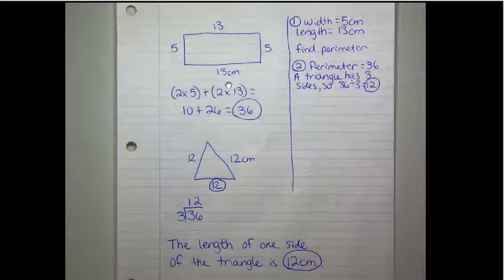We need to find the perimeter of the rectangle. 2 times 5 is 10, and 2 times 13 is 26. 10 plus 26 is 36. So the perimeter, or the length of the wire, is 36 centimeters.